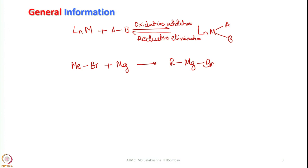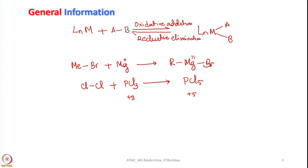If you see this one, this is a typical oxidative addition reaction - magnesium begins in zero valent state and it goes to plus 2. Another reaction: let us take chlorine and treat with PCl3 at appropriate reaction conditions, what we get is PCl5. Here phosphorus goes from plus 3 state to plus 5 state and its coordination number goes from 3 to 5. Remember, an element having two accessible oxidation states with a difference of two electrons is a must to perform oxidative addition reaction.